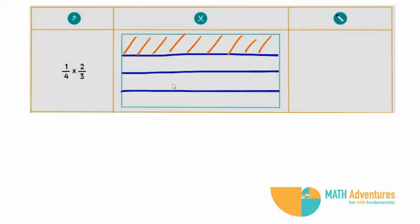Again, divide your rectangle into 3 parts as the denominator of your second fraction is 3. And, shade 2 out of the 3 parts using any other color.